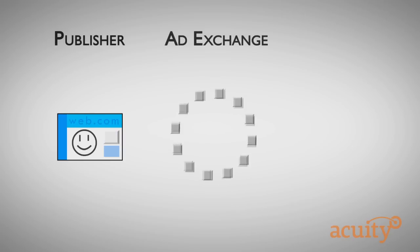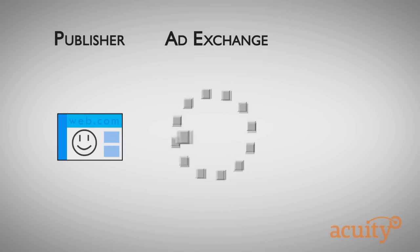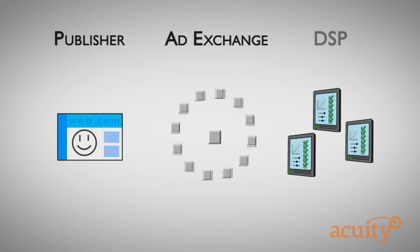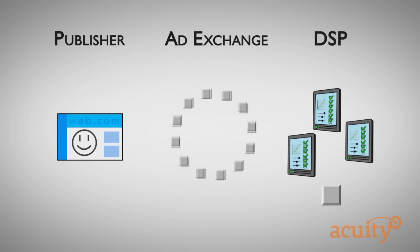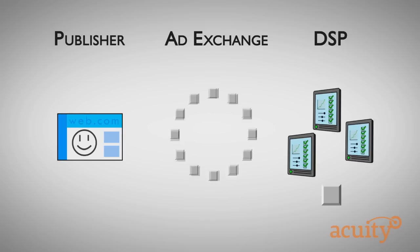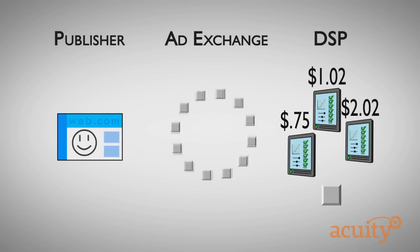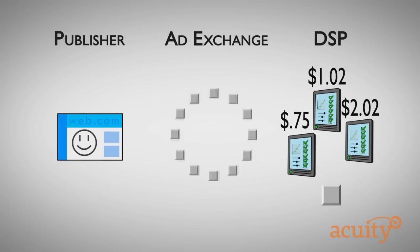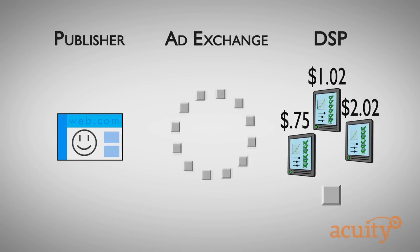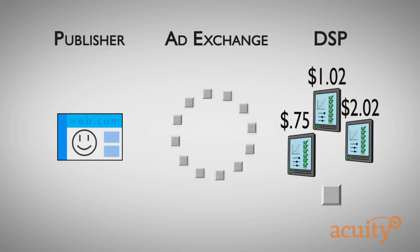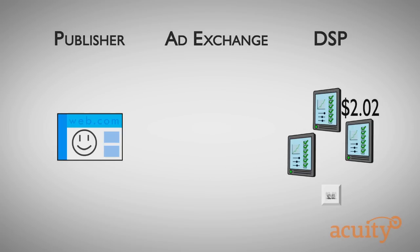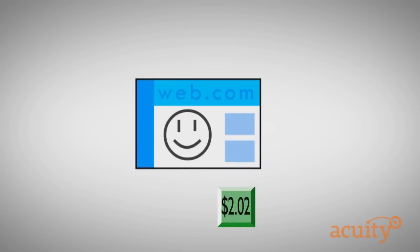At its most basic form, the RTB process unfolds like this. 1. The publisher provides its inventory to an ad exchange, who is responsible for holding an auction during which the DSPs, on behalf of the advertisers, will place a bid on each impression. 2. The value of the bid is based on the value of that impression as determined by the advertiser's parameters with the DSP. The bidding process ensures that each impression is sold at a maximum price, dictated by real-time market demand. 3. Once the bidding is completed, the winner is chosen and the ad is served on the publisher's website.